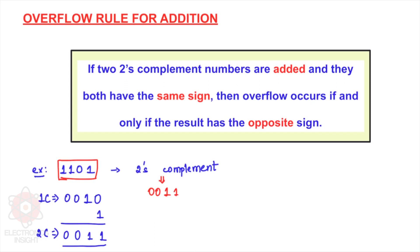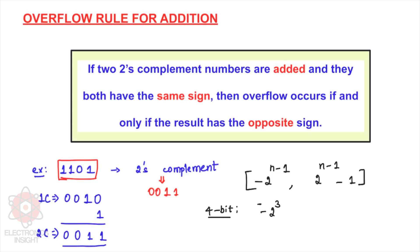The range of two's complement numbers that can be accommodated is from −2^(n−1) to 2^(n−1) − 1. For a 4-bit representation, the maximum range of numbers we can accommodate is from −2^3 to 2^3 − 1, which is −8 to +7. So this is the set of numbers that can be accommodated in a 4-bit two's complement representation.